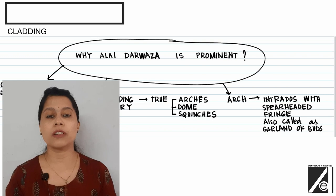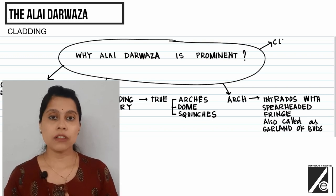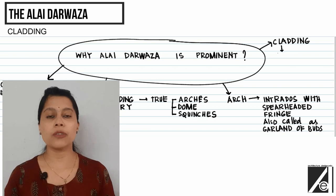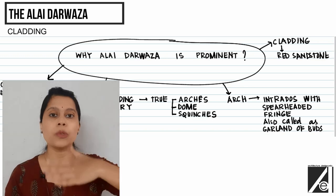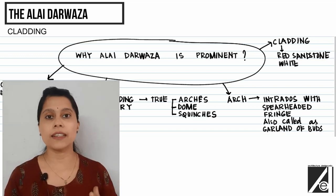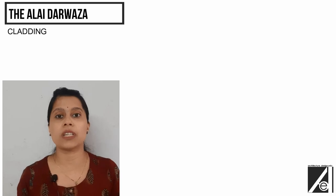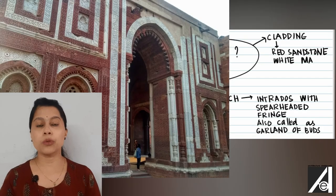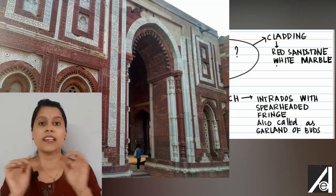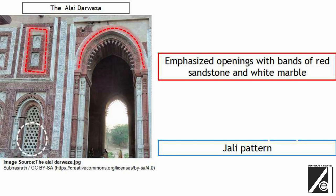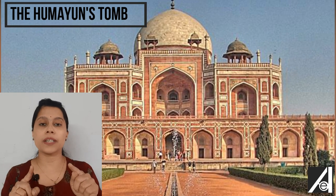Another prominent feature is the cladding. Rather than using plain red stone throughout — which would have been quite boring — the openings are emphasized through alternating bands of red sandstone and white marble. This technique was also used in many subsequent buildings; for example, Humayun's Tomb, built by the Mughals, similarly emphasizes its openings with alternating bands of red sandstone and white marble.